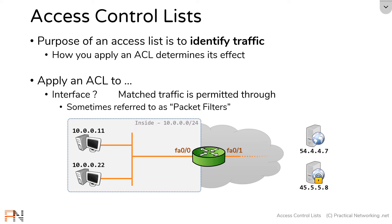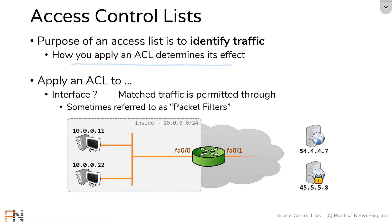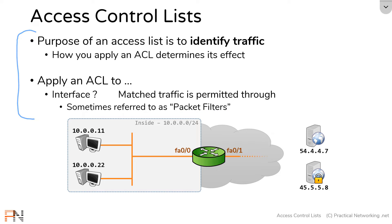Do you remember this slide back from video 1? In this slide, we talked about how an access list is simply there to identify traffic, and that an access list by itself doesn't actually do anything. You have to apply the access list before it actually does something, and there are many different ways to apply the ACL. The most common of which is applying an access list to an interface. When you apply an access list to an interface, that access list is referred to as a packet filter. We unpacked all of this in the first video of this series.